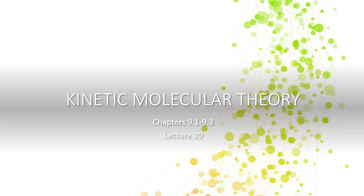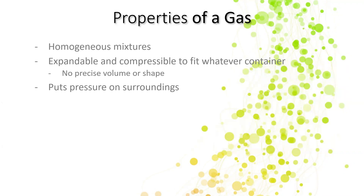So the kinetic molecular theory — just a little bit of background — that's the theory of how gas moves, just the movement of gas. Let's start by talking about some of the properties of gas. Gas is a homogeneous mixture, and a homogeneous mixture is something that looks the same throughout. So when we go outside, we can't really tell the difference between the gas to the right of us and to the left of us. It all looks the same everywhere — it's all mixed together, you can't see different parts.